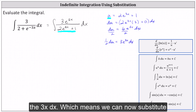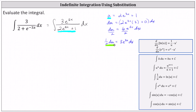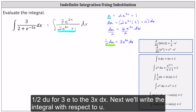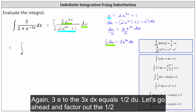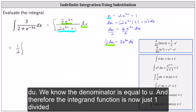Which means we can now substitute 1 half du for 3 e to the 3x dx. Next we write the integral with respect to u. Since 3 e to the 3x dx equals 1 half du, we factor out the 1 half. We know the denominator is equal to u, and therefore the integrand function is now just 1 divided by u.